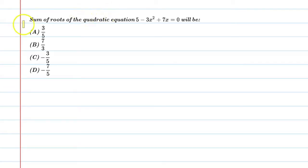Hello students, let's solve this question. Sum of roots of the quadratic equation 5 - 3x² + 7x = 0 will be. So in this question, we are asked what will be the value of the sum of its roots. We need to add its roots.